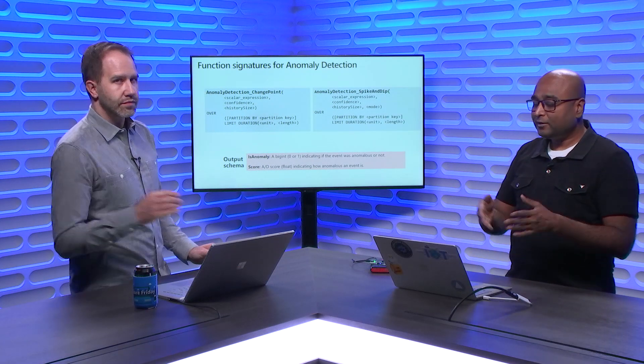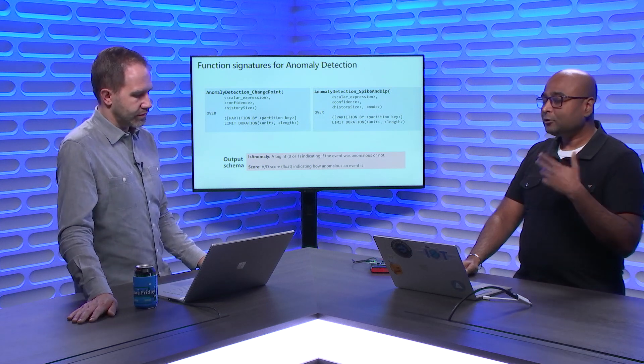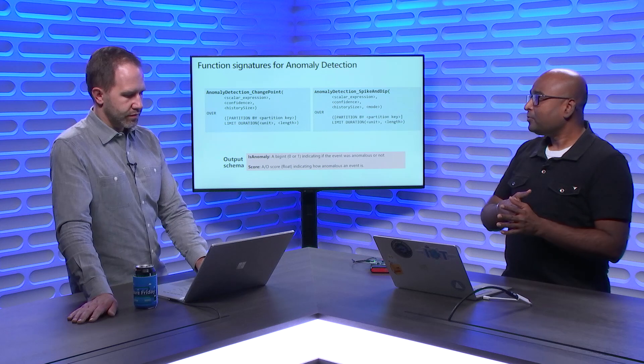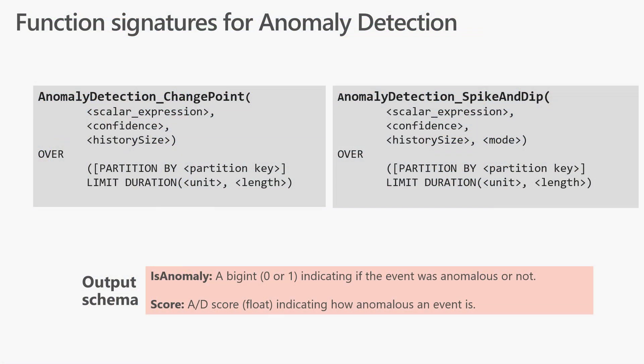When the function runs, you get two different types of output. One is anomaly, which is zero or one — one indicates an anomaly was detected, zero means no anomaly. And there is also a score: for every event processed, the model generates a score and we expose those score statistics for every event.